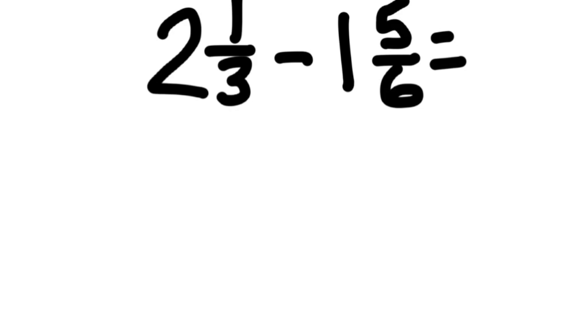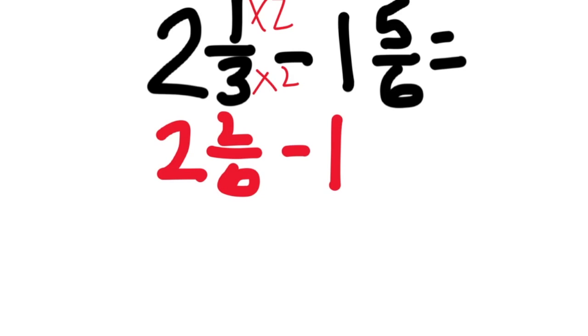2 and 1 third minus 1 and 5 sixths. This one's going to be a little bit more difficult, and you'll see that when we find common denominators. So, we want a common denominator of 6, and we'll rewrite this now as 2 and 2 sixths minus 1 and 5 sixths. Now here is why this problem is more difficult than the last one.